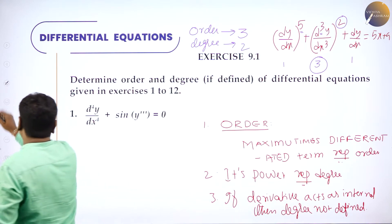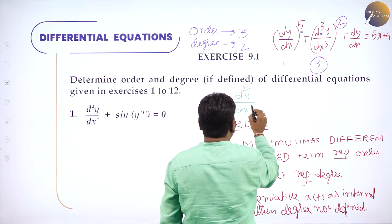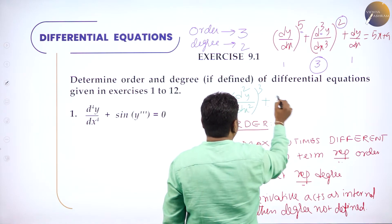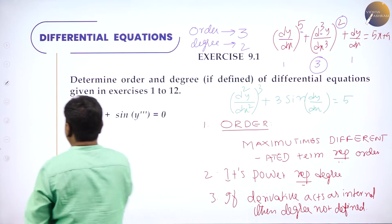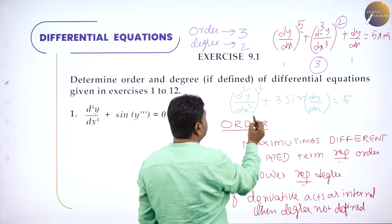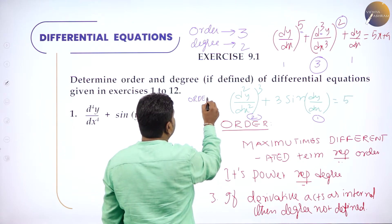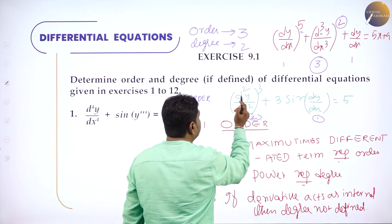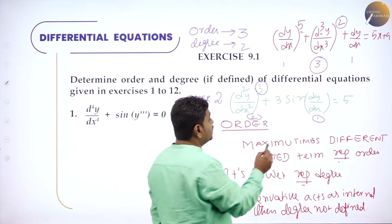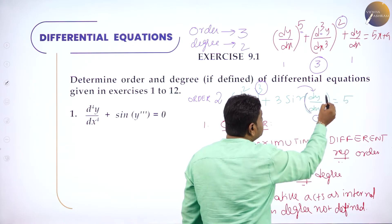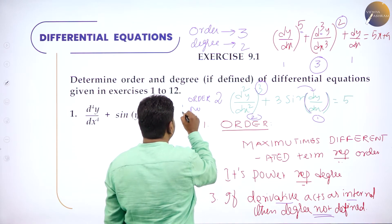Let me take one more example. Consider: (dy/dx + d²y/dx² + 3)³ + 3·sin(dy/dx) = 5. For order: d²y/dx² is 2 times differentiated, dy/dx is 1 time. So order is 2. Its power is 3, but degree is not 3, because derivative is acting as an internal function inside sine. If derivative acts as internal function, degree is not defined.